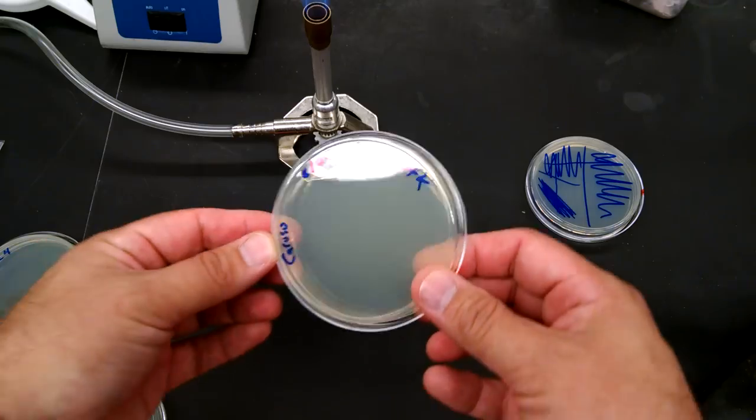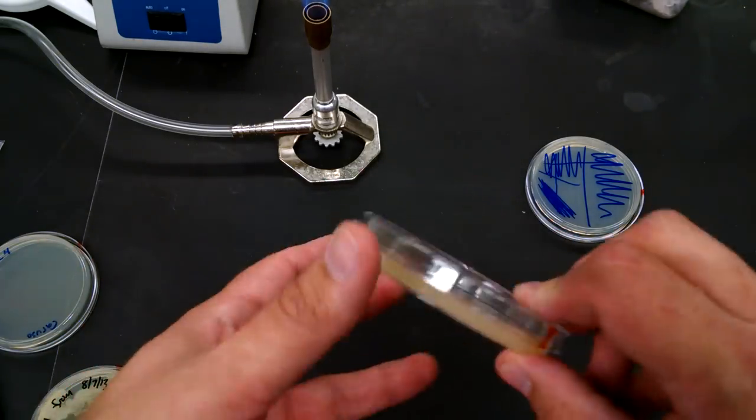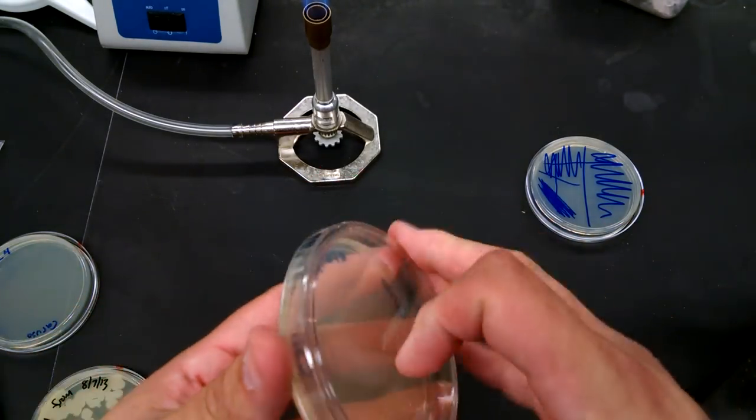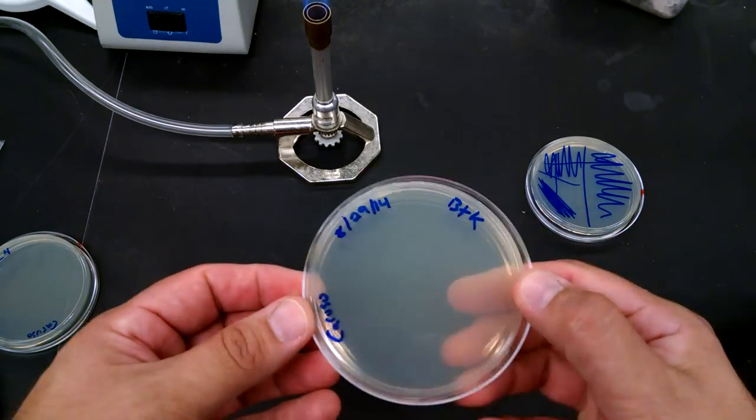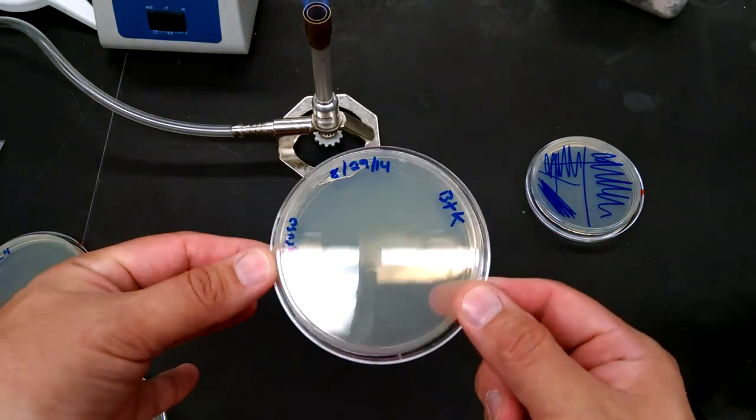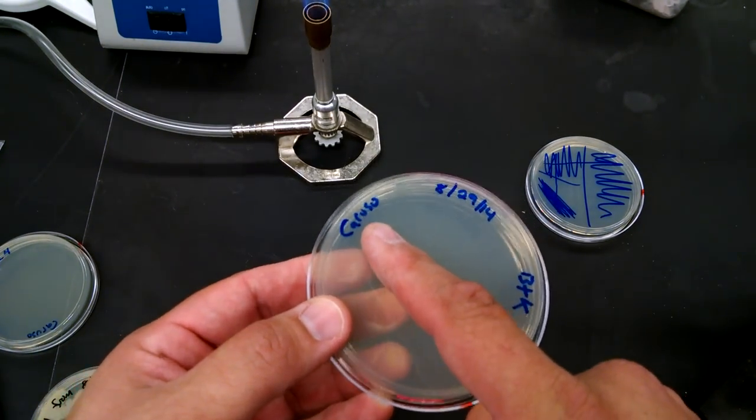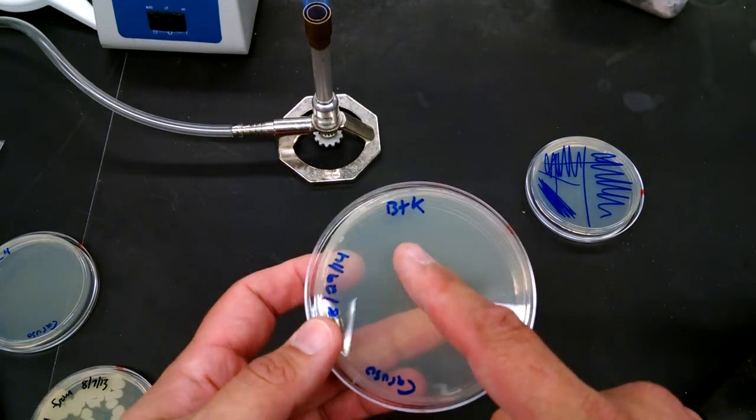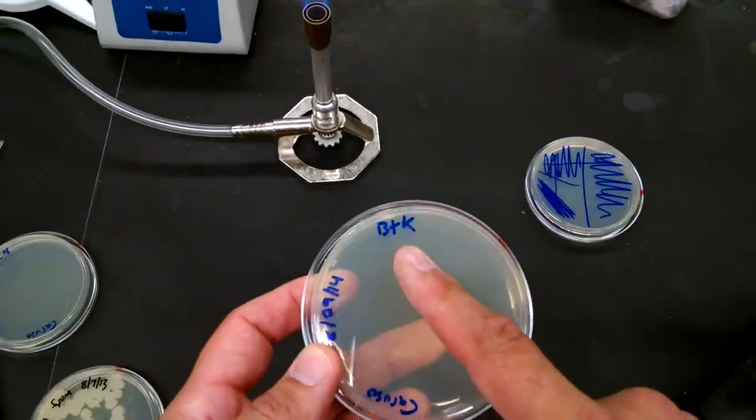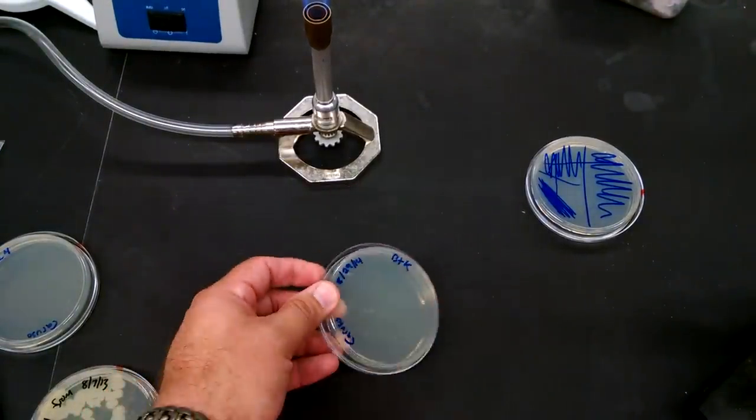So we have a plate here. It's already labeled. Remember, you want to label your plates. You want to label them not on the top because lids come off, right? Label them on the bottom because that's also how we store them. We store them upside down. So we've got it. I've got my name on it, I've got the date, and what I'm putting on it. It's going to have BTK, the bacteria that we use in the Phage Hunters lab.